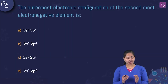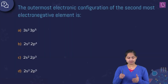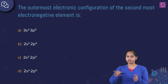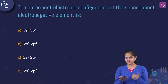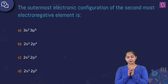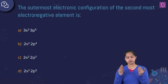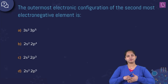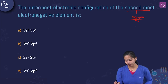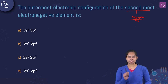The question is: what is the outermost electronic configuration of the second most electronegative element? From our knowledge of periodic properties, the second most electronegative element is oxygen. The first most electronegative element is fluorine.